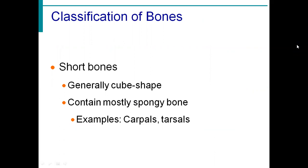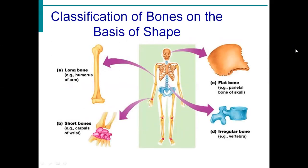The next type is short bone. Short bone is generally cube-shaped. It contains mainly a spongy type of part. The basic example of short bone is the carpal and tarsal bones. Short bones are mainly useful for movements of fine surfaces in the hands and legs.